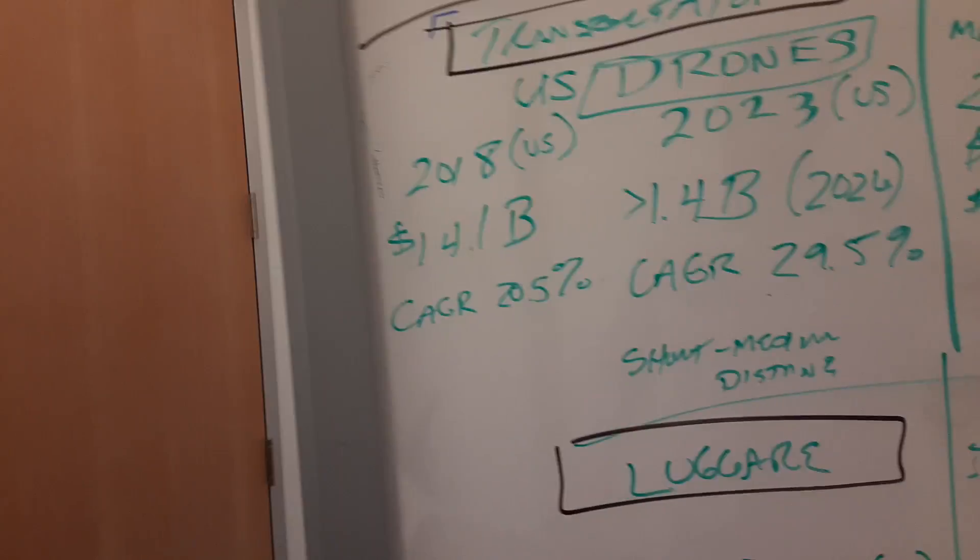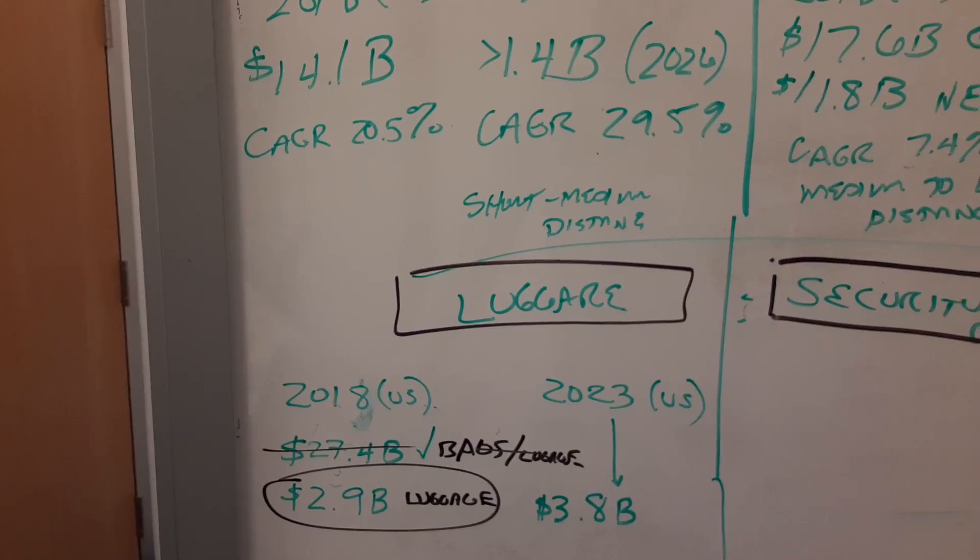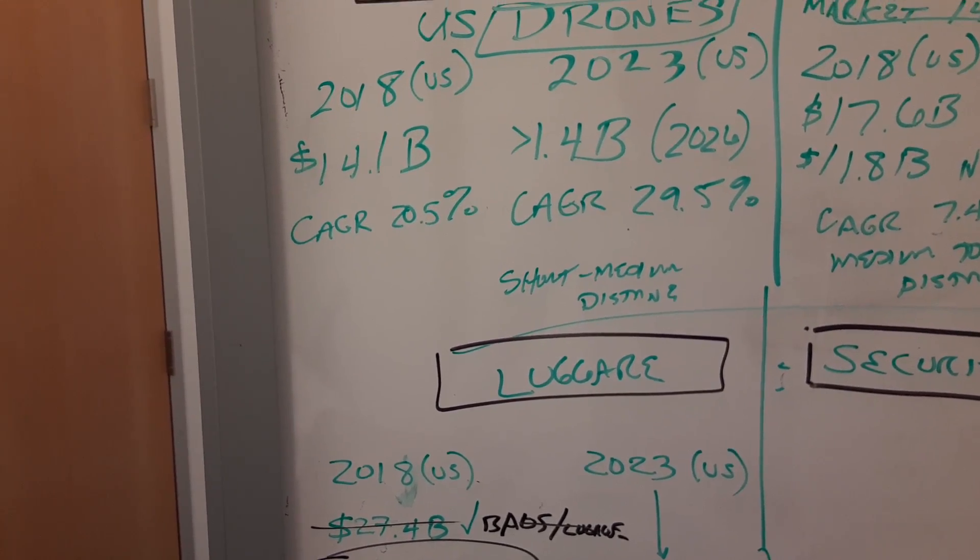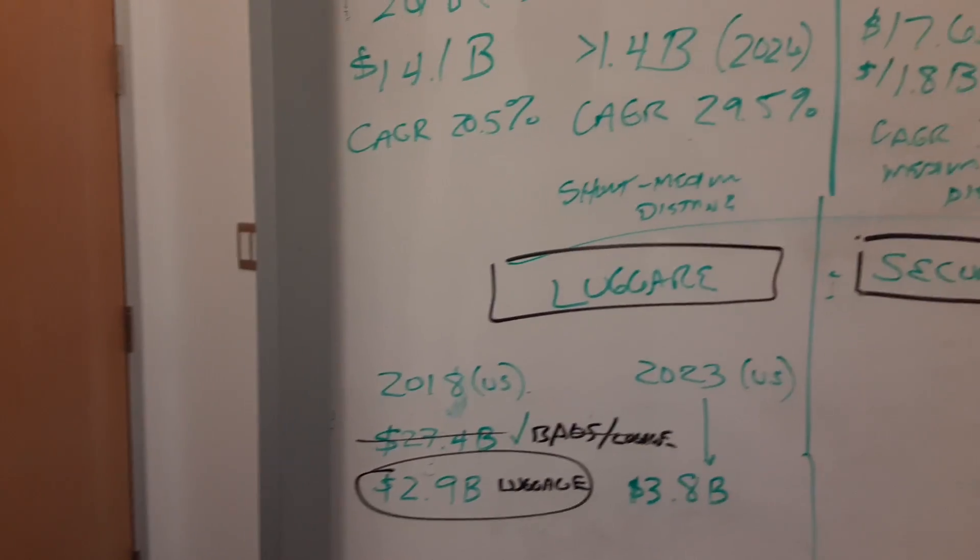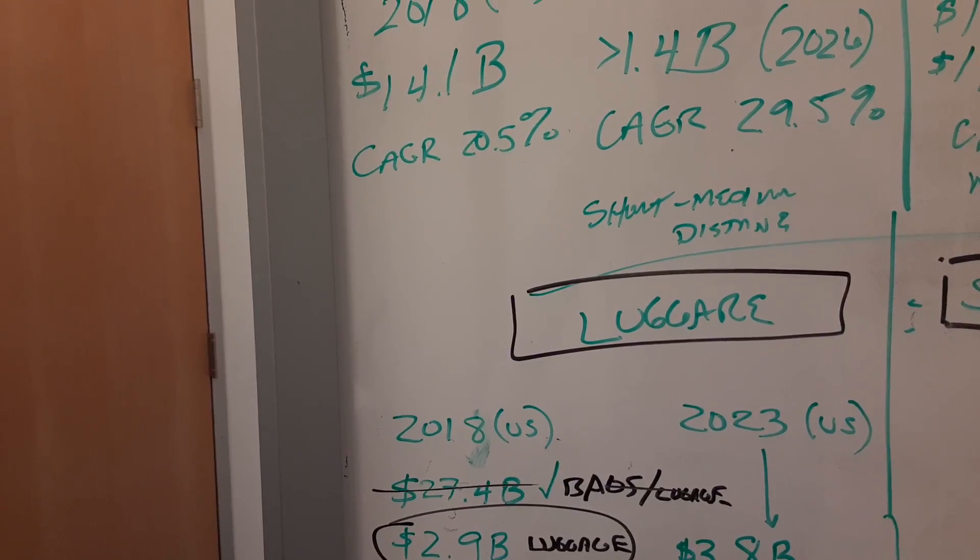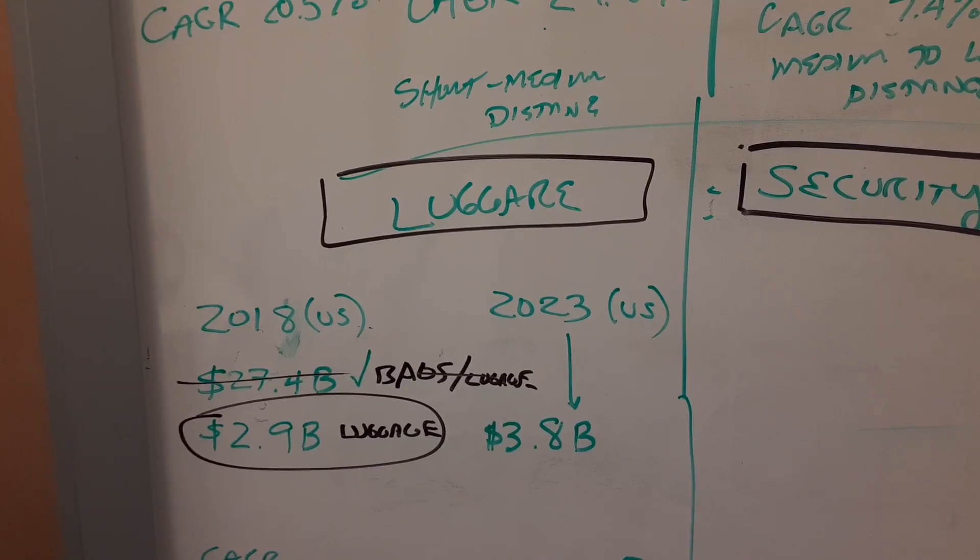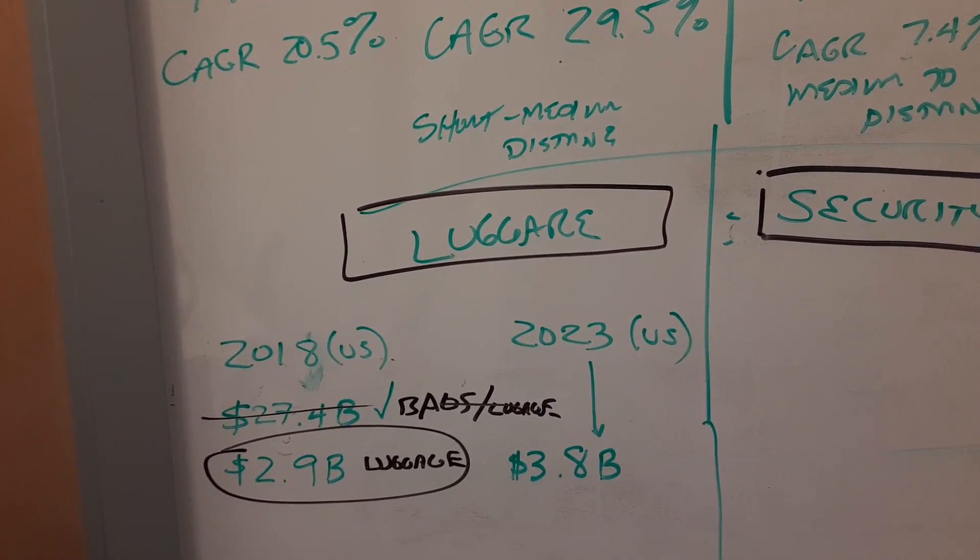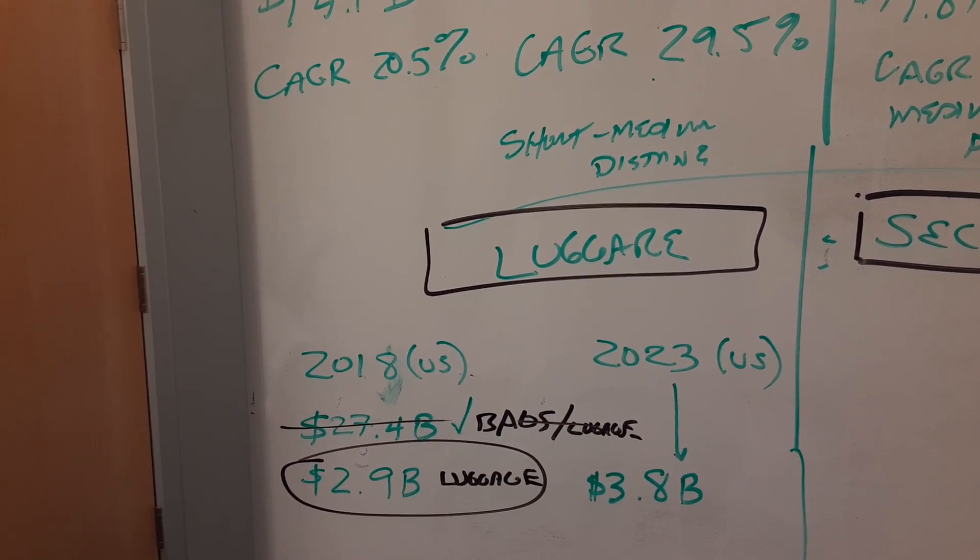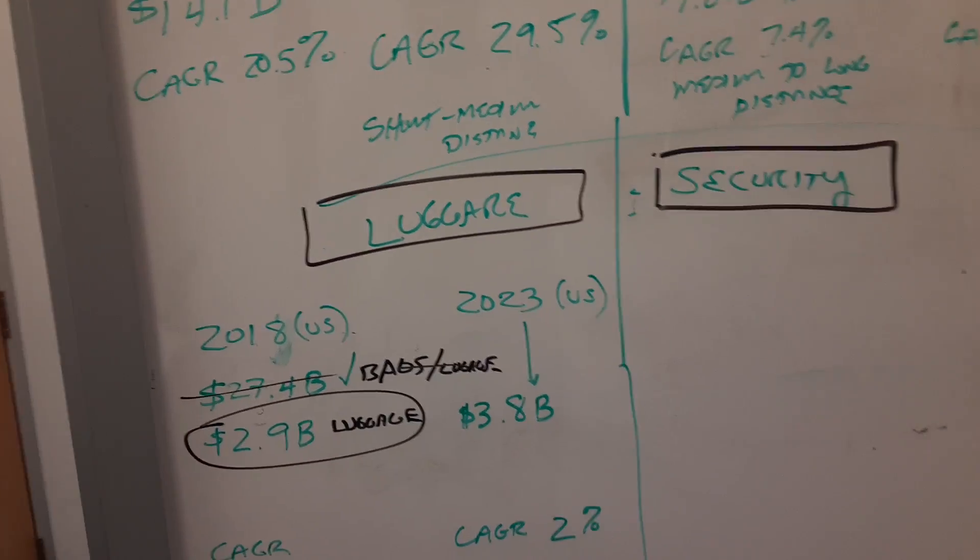Looking at luggage now, it's a 27.4 billion dollar industry in the US for bags and luggage. Luggage specifically, the more important number, is a 2.9 billion dollar industry in 2018. We're looking at 3.8 billion by 2023, just shy of a hundred million to a billion dollar growth. That's a CAGR around 2%.